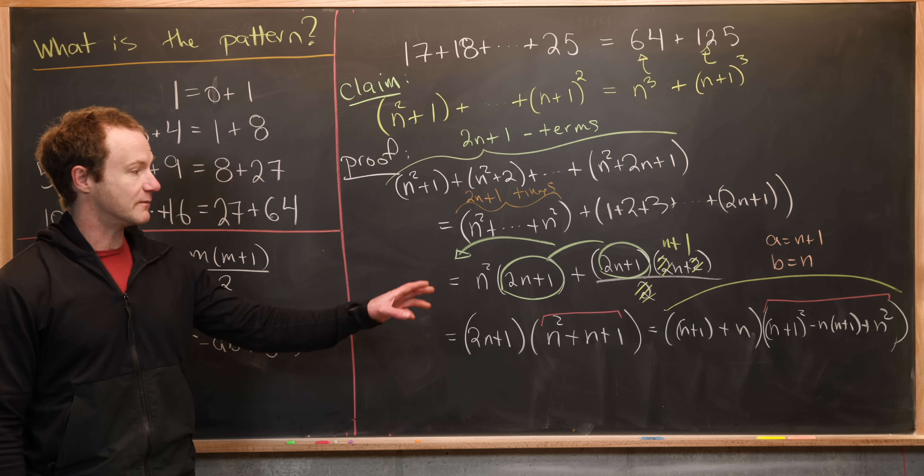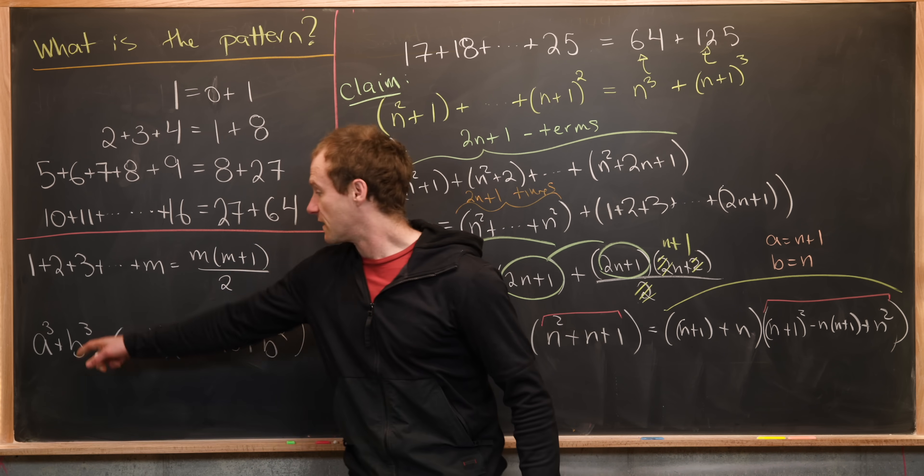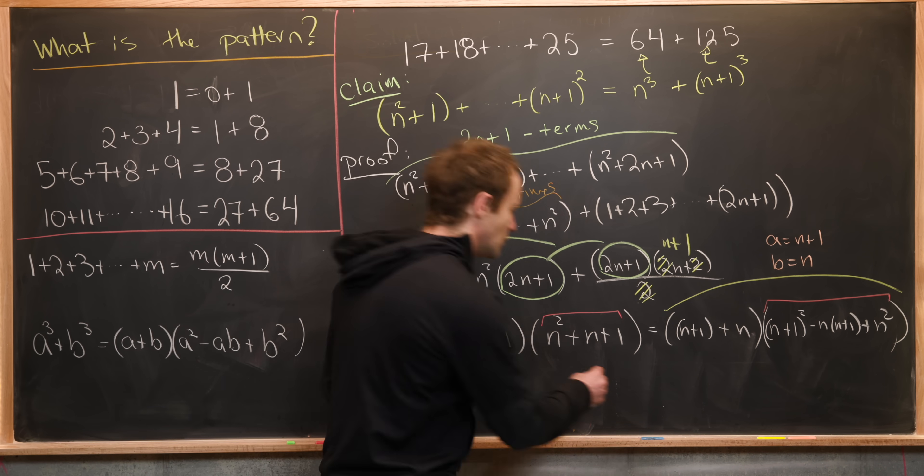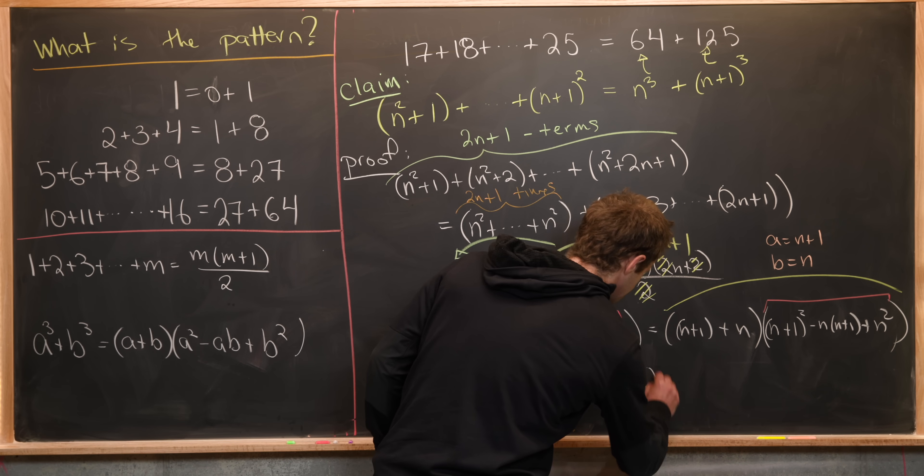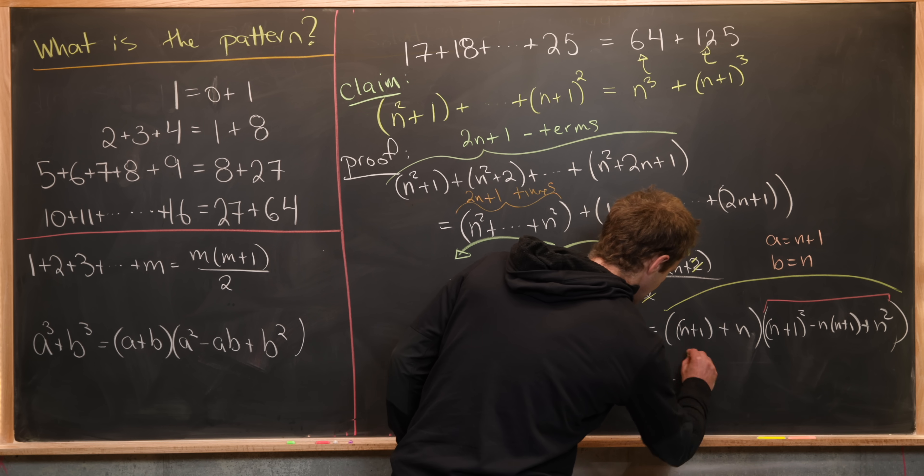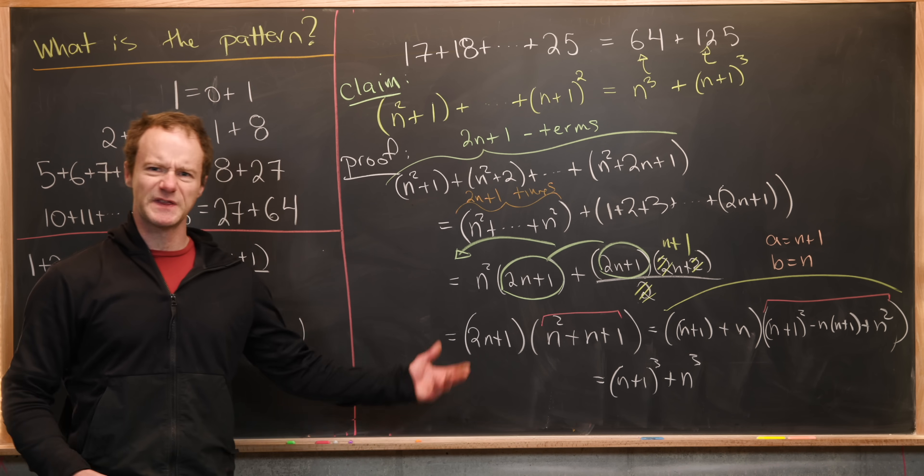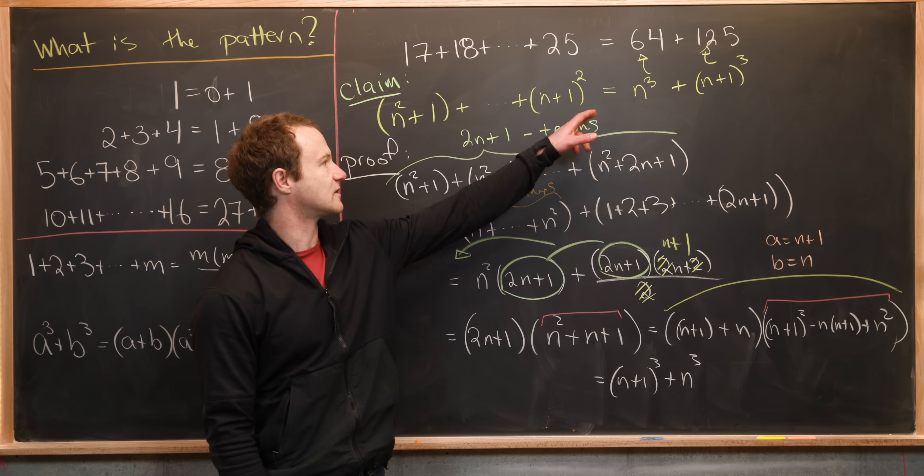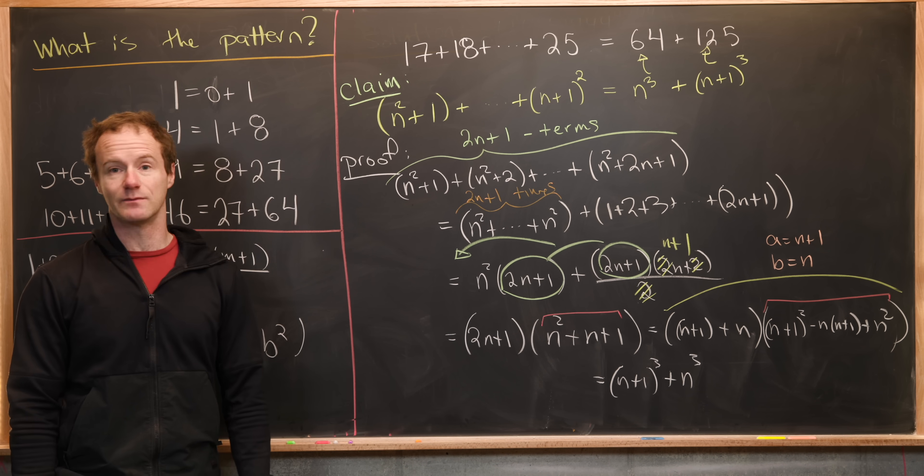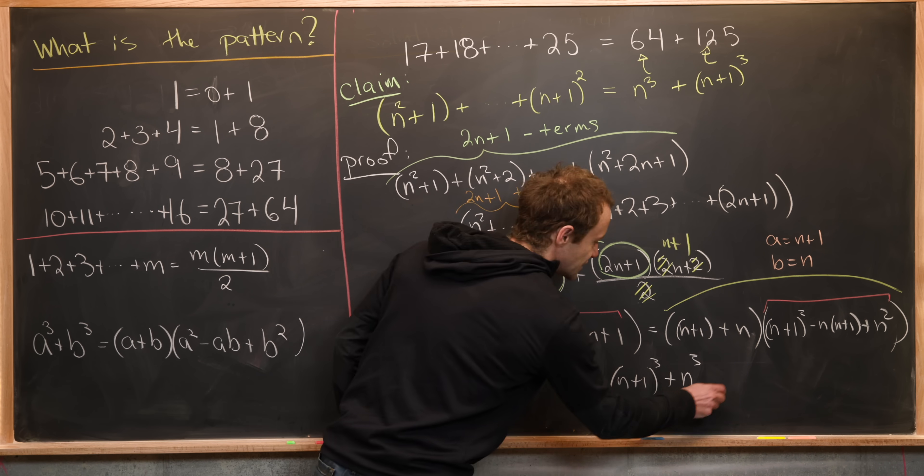So that means that if we multiply those two together, we'll get the left hand side of this, which in fact is n plus one cubed plus n cubed. But then since addition is commutative, that's clearly n cubed plus n plus one cubed. So that finishes our proof.